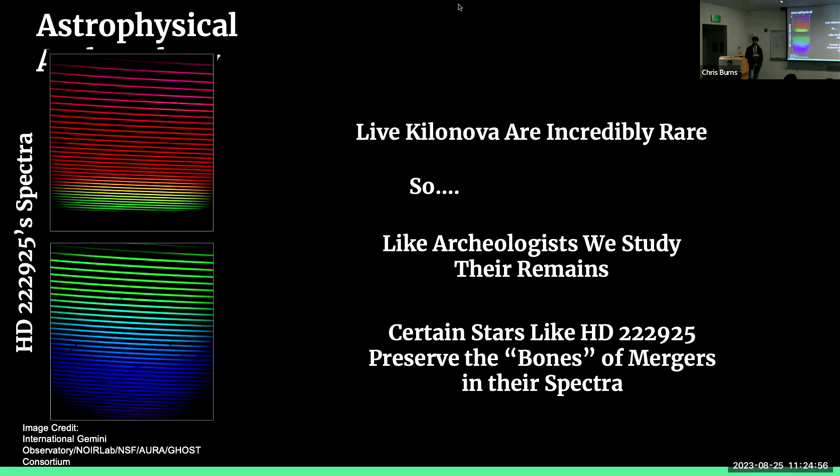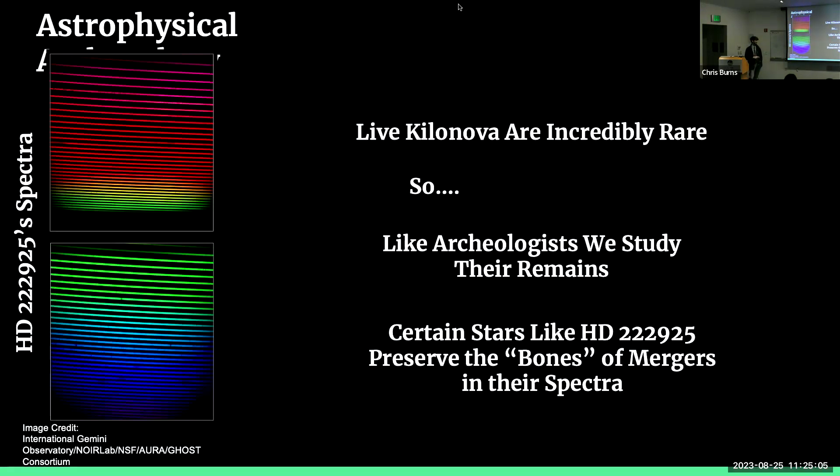But what do I mean by observed abundances? This is astrophysical archaeology. So live Kilonova are incredibly rare. We've only seen one of them confidently. So like archaeologists, we are going to study their remains. Certain stars like HD 22925, essentially it's just a metal-poor star that's really good at preserving the bones of mergers. Basically, the elements that we expect to see after Kilonova are well-represented in certain stars like HD 22925. In its spectra, what you see here, these little black lines are just certain elements absorbing certain bands of light, which we can then understand how much of each of these elements exist. And they're very thin, which is actually good because it is metal-poor.